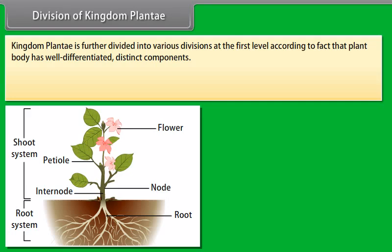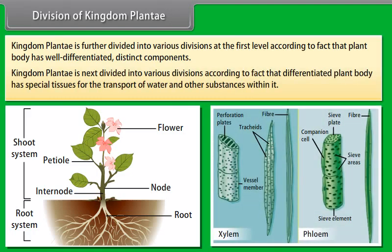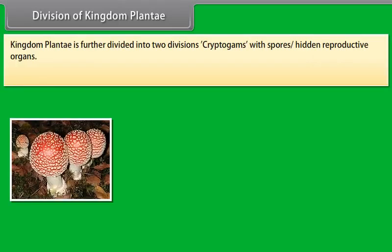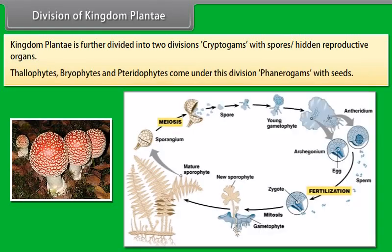As of 2004, some 287,655 species had been identified, of which 258,650 are flowering plants and 18,000 are bryophytes. Green plants, sometimes called Viridiplantae, obtain most of their energy from sunlight via a process called photosynthesis. A few members are partially heterotrophic, such as insectivorous plants or parasites. Bladderwort and Venus flytrap are examples of insectivorous plants, and Cuscuta is a parasite.